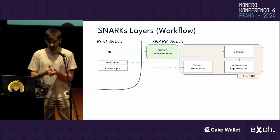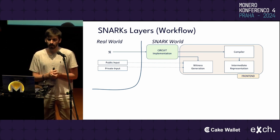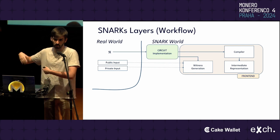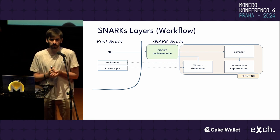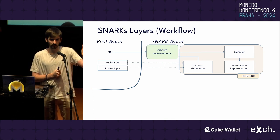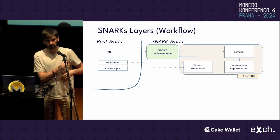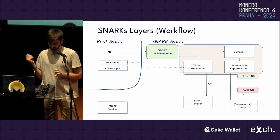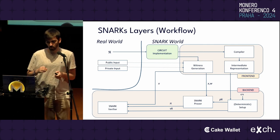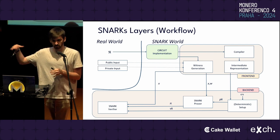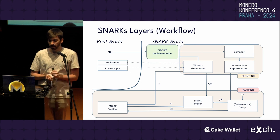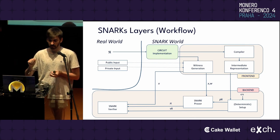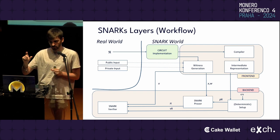Then we have the frontend, which takes the circuit as input and compiles down to two things: one is an intermediate representation used as input for our backend, and the other is a witness generator, which takes the public and private inputs, runs the computational logic from the circuit, and creates a trace with all intermediate values and final outputs. Then we have the backend, composed of three functions. The setup function takes a common reference string and the intermediate representation and creates a prover key and a verifier key.